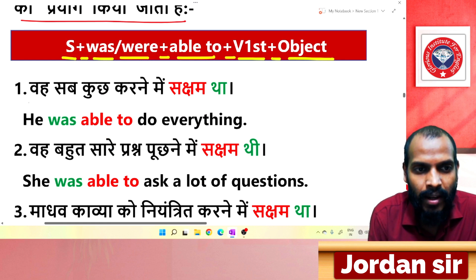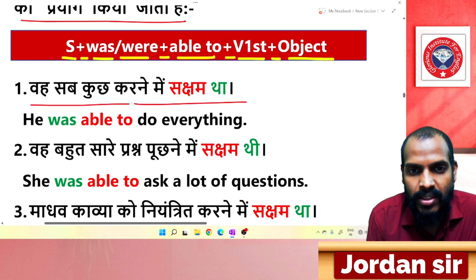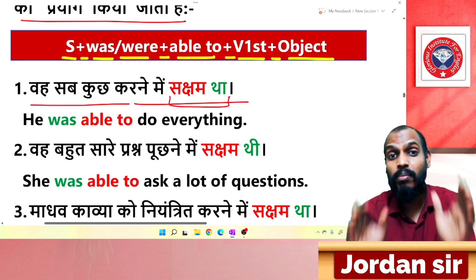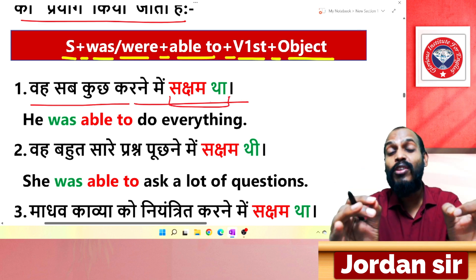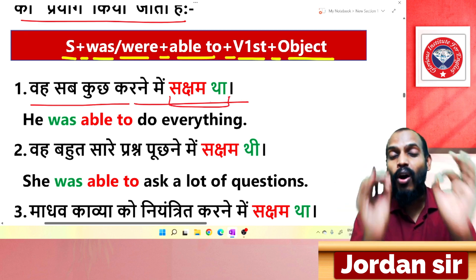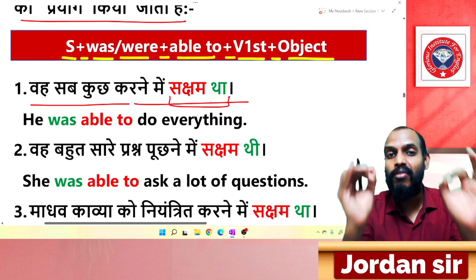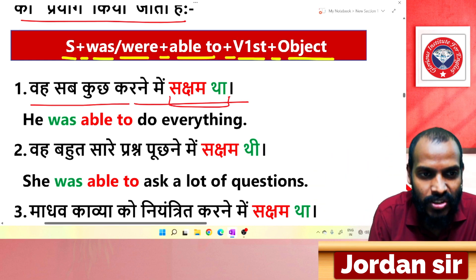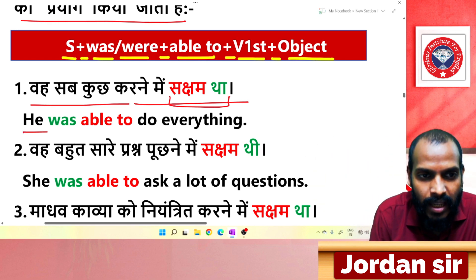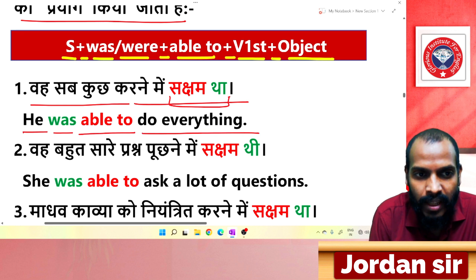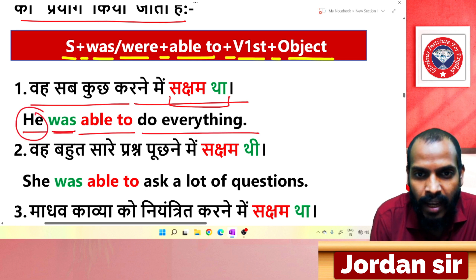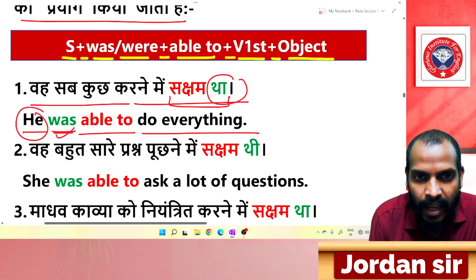First example: 'वह सब कुछ करने में सक्षम था' — the ending 'सक्षम था' tells us to use 'was + able to'. The translation is: 'He was able to do everything.' Here 'he' is a singular subject, so 'was' is used.